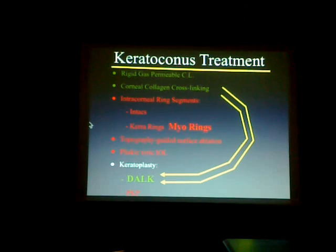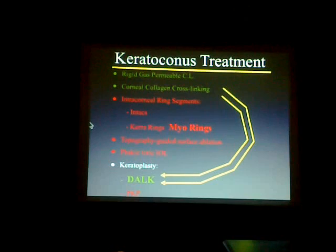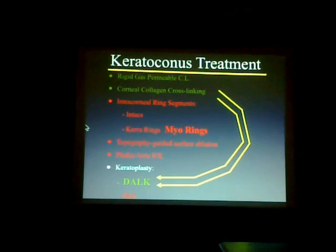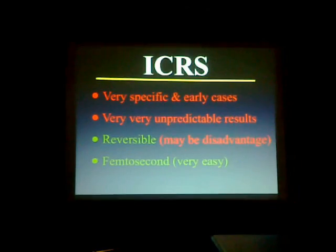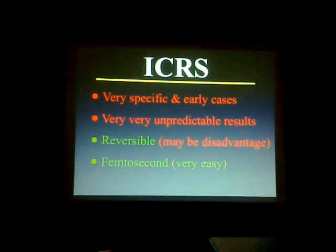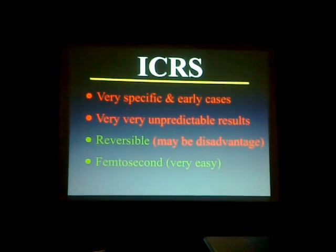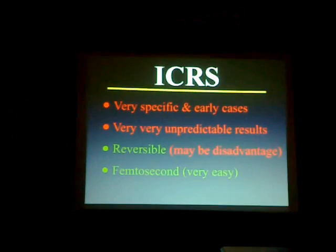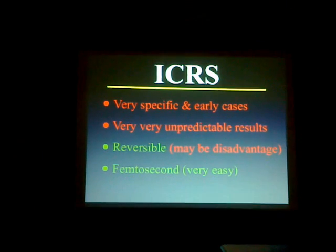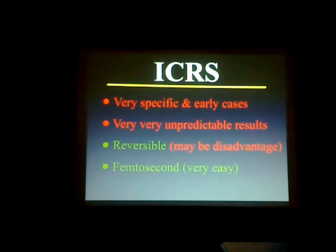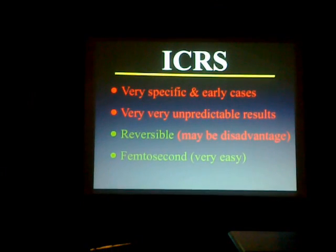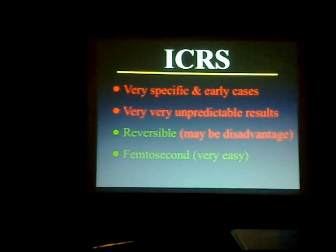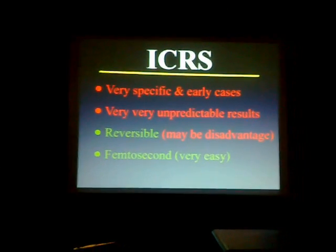After the introduction of these options, I changed my mind and jumped from treating keratoconus directly after failure of contact lenses and cross-linking to doing DALK. For intracorneal ring segments, results are very unpredictable and specific to early cases. Being removable is considered an advantage, but in my mind, it's both an advantage and not an advantage.